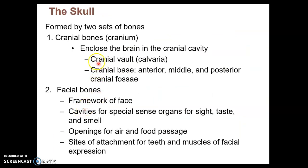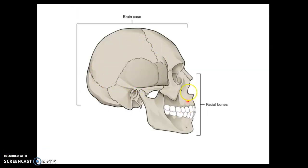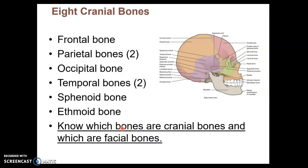The skull consists of two subdivisions: cranial bones that enclose the brain, and facial bones which make up the face. In this image you can see how the skull is divided into the cranial bones encasing the brain and the facial bones making up the face. You need to know which bones are cranial bones and which are facial bones. We're going to start with the eight cranial bones.